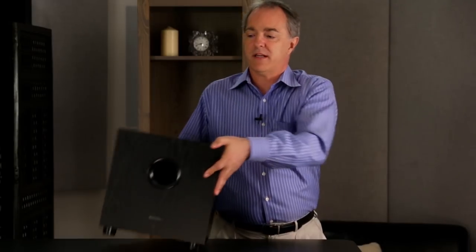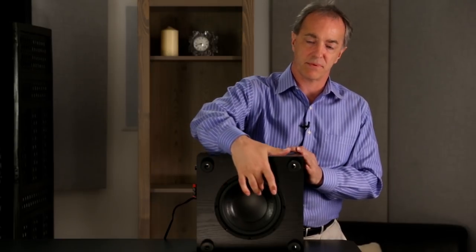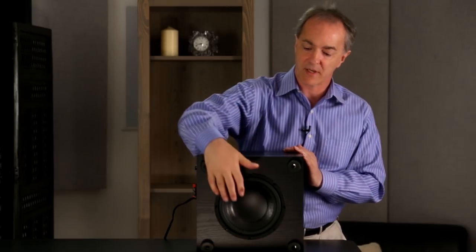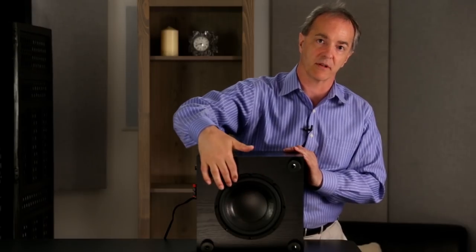In the SW8, we have a long linear throw eight inch driver. Its pulp cone is stiffened with an extra large dust cap to give a very strong structure resistant to the internal box pressure and it has a large rubber roll surround. Combined with a large vented magnet, this gives a very linear low frequency response.